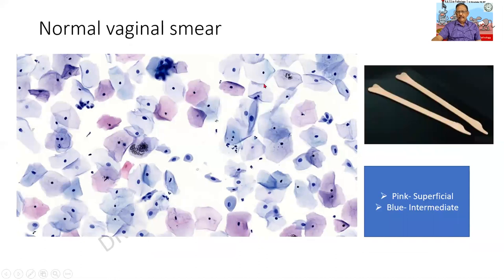This is a normal vaginal smear. When you obtain a smear from a lady, you find there are some pink-colored cells with dot-like nuclei — they are called the superficial cells. There are blue-colored cells with a slightly larger nucleus — which are called the intermediate cells. Some cells can be very small; they are called the parabasal cells. And it is a normal vaginal smear.